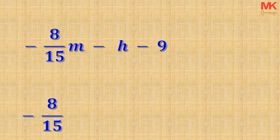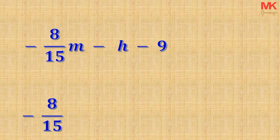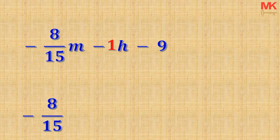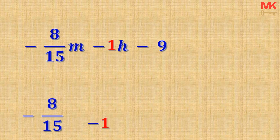We will move to the H term. We cannot say that the coefficient of the letter H is just the negative operation, because a negative operation alone cannot be a coefficient — there should be a number to make it complete. We just said that a letter that stands alone has an invisible coefficient of 1. So we introduce our coefficient of 1 in front of the letter H, making the coefficient negative 1. Therefore, the coefficient of H is negative 1 and the coefficient of M is negative 8 over 15. The term negative 9 is not a coefficient — it is a constant because it doesn't have any letter attached to it.